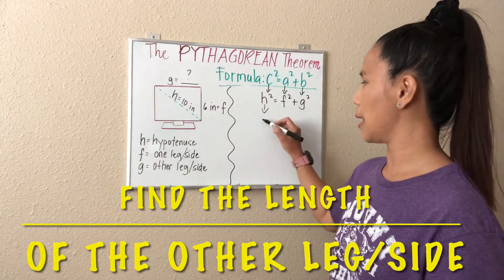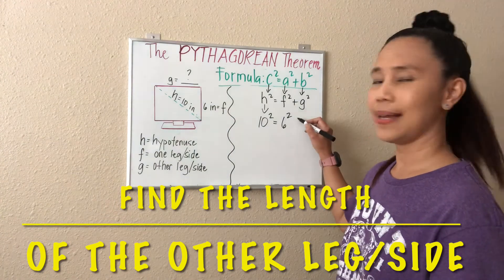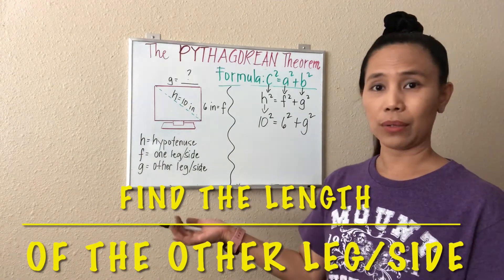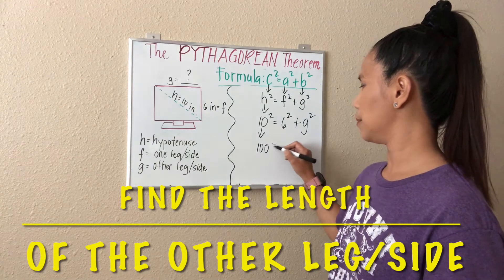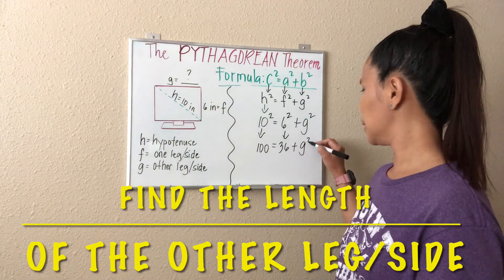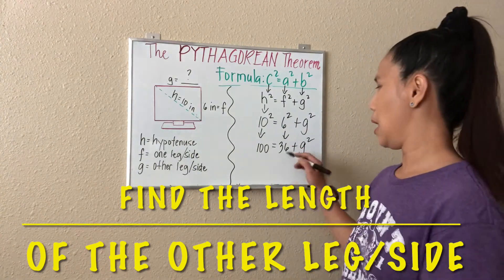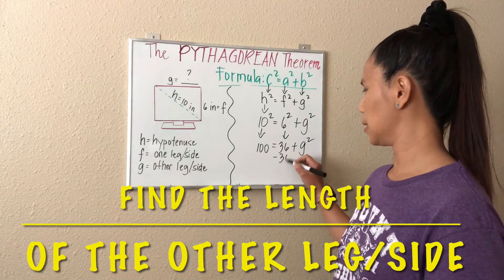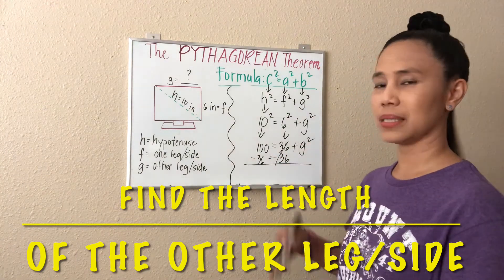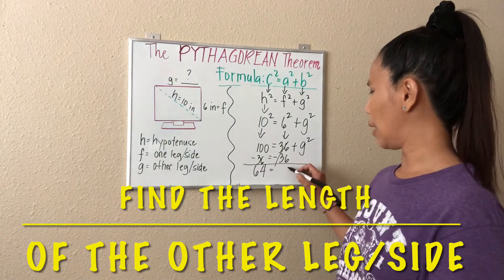H is equal to 10, so we just substitute that — don't forget the square as well. F is equal to 6, so 6 squared. G is the unknown, so we just have to write that down. 10 squared is equal to 10 times 10, which is 100. And 6 squared is 6 times 6, which is equal to 36. Still copy G squared. Now to eliminate the numbers with the variable, we do the opposite — minus 36 here. So we subtract 36 on the other side as well. Canceling this because 36 minus 36 is 0. We subtract 100 minus 36, and that is equal to 64. Bring down G squared.